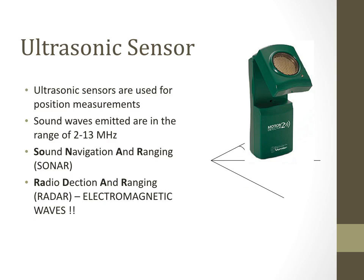Ultrasonic sensors are used for position measurement. Sonar, for example, releases a wave, which reflects back to determine the distance of an object. Ultrasonic sensors are also known as radar — as seen in movies, navigation systems use radar to detect nearby objects and determine if they are approaching or moving away. Ultrasonic sensors are widely used in such navigation and detection applications.